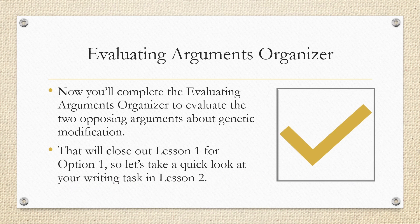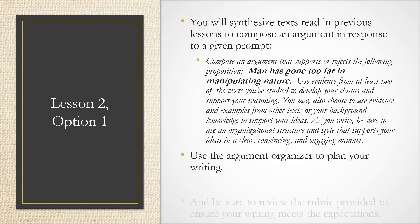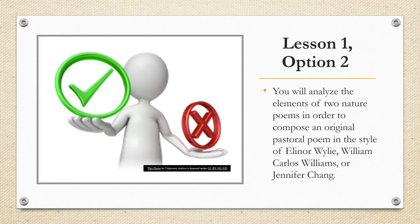Now you'll complete the evaluating arguments organizer to evaluate the two opposing arguments about genetic modification. That will close out lesson one for option one. Let's take a quick look at your writing task in lesson two. Revisiting the prompt from earlier: when you compose an argument in response to this prompt, you'll need to consider what you've read about genetic modification — the genetic modification of the malaria-carrying mosquito, the genetic modification of food, and what you read in lesson one this week. Develop your own position on whether or not it is ethical for man to manipulate nature and to what extent. Have we gone too far with genetic modification? You may use the argument organizer to plan your writing, and be sure to review the rubric provided.